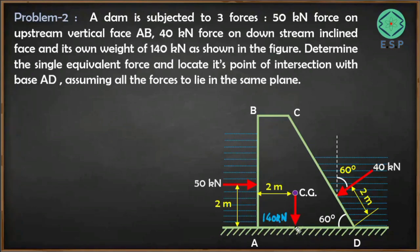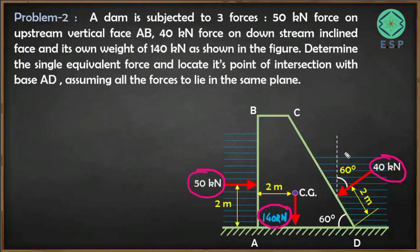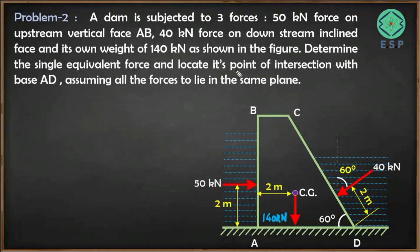So 140 kN is the weight of the dam acting downward. On the vertical face we have 50 kN, on the inclined face we have 40 kN, and the dam weight is 140 kN downward. We have to find the single equivalent resultant force and locate its point of intersection with the base AD.